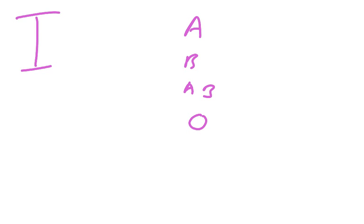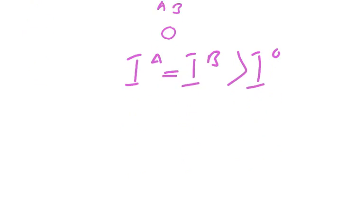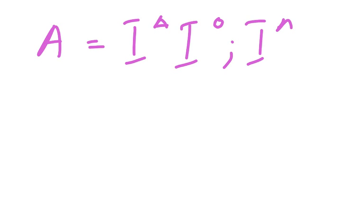So the alleles that exist are the IA allele, which is co-dominant to the IB allele, but both are dominant to the IO allele. So, look at some genotypes. If you have blood group A, then what could be your genotype? It's IA IO or IA IA.